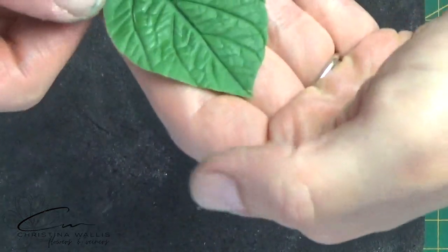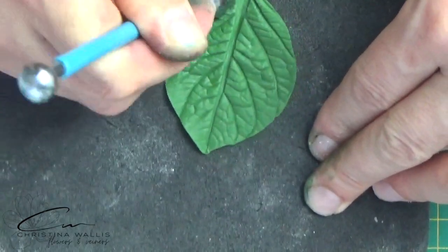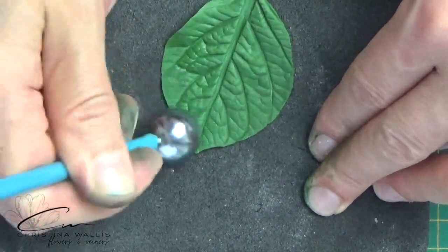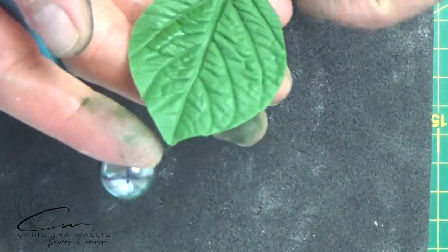But this leaf is kind of more of a fresh leaf, not an autumn leaf, so I'm going to leave the edges intact. But yeah, different things you can do with it.